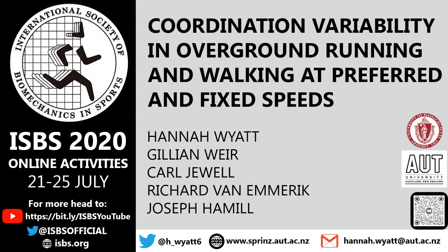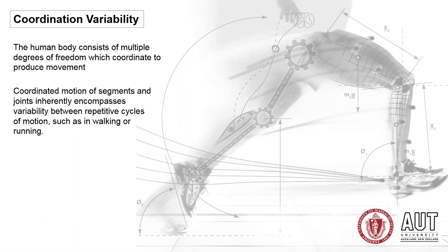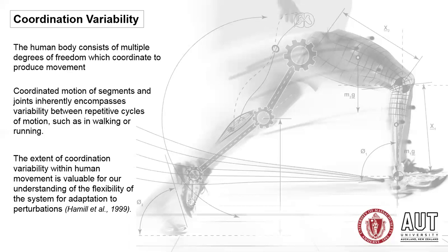I will be presenting today on the coordination variability in overground running and walking at preferred and fixed speeds. When we're considering coordination variability, we know that human movement is created by coordinated motion of joints and segments. Each of these consist of multiple degrees of freedom, and as a result, the number of ways in which coordinated structures are able to move makes it exceedingly difficult to reproduce the same motion across different trials. So repetitive movements such as walking and running will inherently encompass a level of variability, and when we're considering multiple structures, we're considering coordination variability. Insight into this variable gives us understanding of the flexibility of a system to adapt to perturbations, which is useful from both the performance and injury perspective.